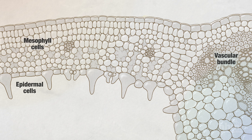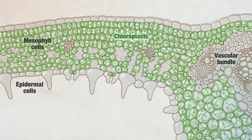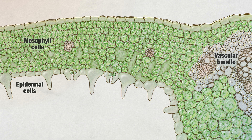Most cells in the middle of a leaf contain large numbers of chloroplasts. Pigments in chloroplasts make these cells green. Chloroplasts are the organelles where photosynthesis occurs.